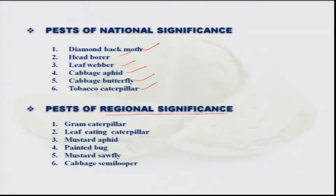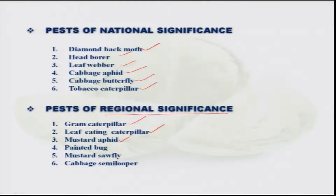Under the pests of regional significance, occasionally you get the gram caterpillar — that is Helicoverpa — some leaf-eating caterpillars like semi-loopers, then the mustard aphid, painted bug, the mustard sawfly, and the cabbage semi-loopers.